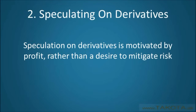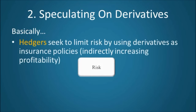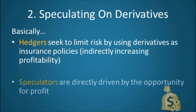The second main use of derivatives is speculation. Derivative speculation is fundamentally different from derivative hedging. Where derivative hedgers are trying to reduce their risk exposure and usually are not motivated by profit in the derivative market itself, derivative speculators are motivated purely by profit seeking. Basically, hedgers seek to limit risk by using derivatives as insurance policies, while speculators are directly driven by the opportunity for profit.